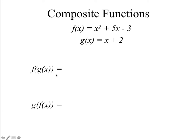A composite function is taking one function and putting it into another. So for instance, this notation f of g of x means you put function g inside function f. So if g of x is x plus 2, we've got to put it in here and square it, and multiply it by 5. We take g of x squared plus 5 times g of x minus 3.